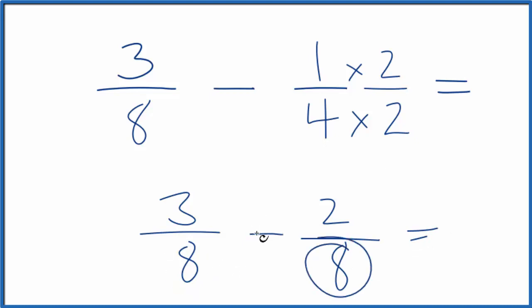We can just subtract the numerators, bring the denominator across, and we'll have the value for 3/8 minus 1/4.